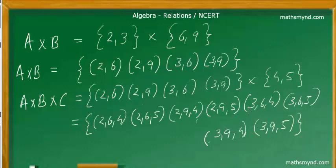see that it's (2,9,4) and then (2,9,5). So it goes on like that, and you get the last ordered pair with the last element of set C, that is 5, and you get a triplet - it's not a pair, it's a triplet - that is (3,9,5). That's how it's done.